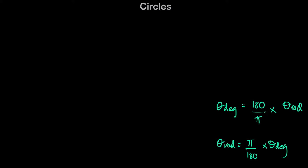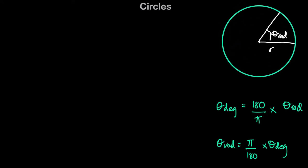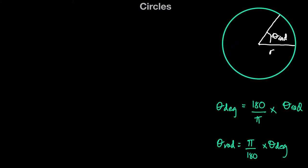Now let's consider this. Let's say that I have a circle over here, and I want to find the area of the sector of the circle — specifically, the area of the sector in terms of the angle theta in radians. We've learned previously that the area of a sector can be found by taking the angle in degrees divided by 360, times the total area of the circle, which is pi r squared.